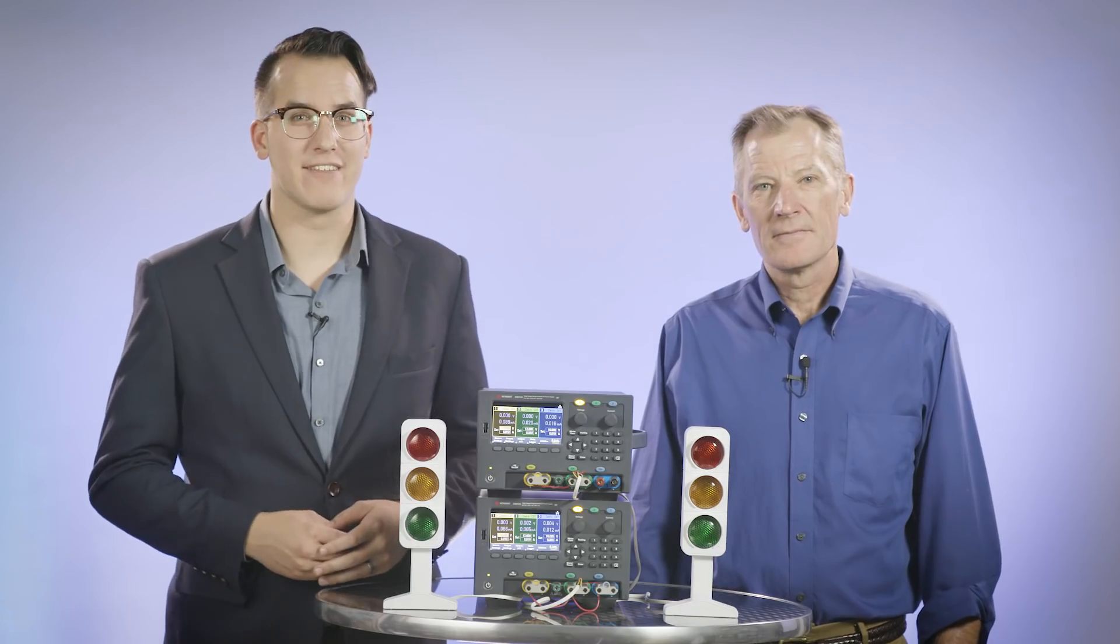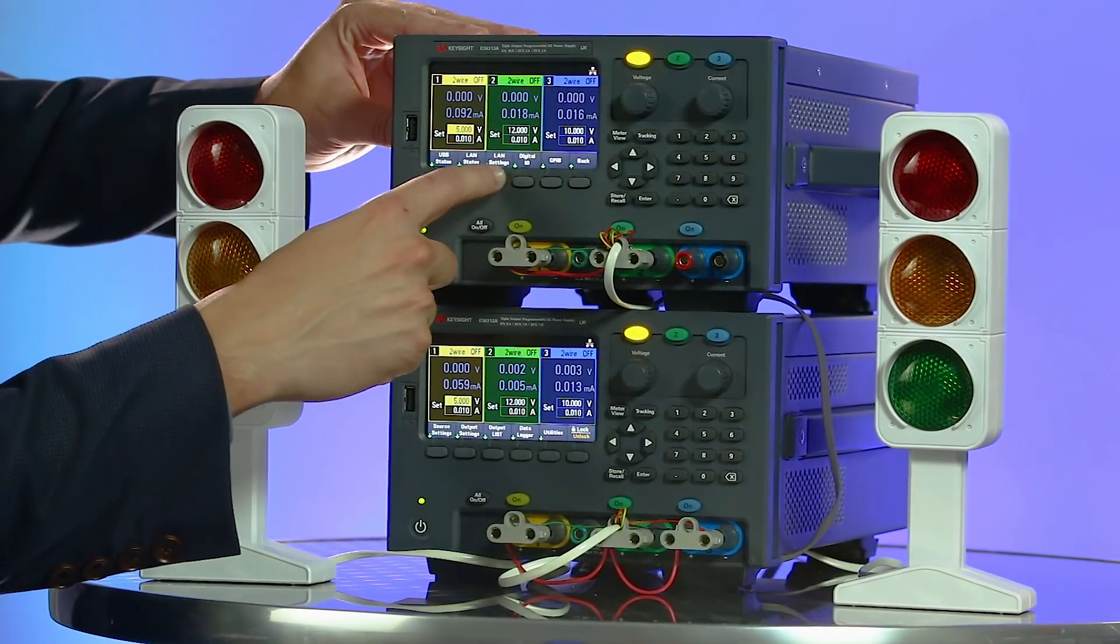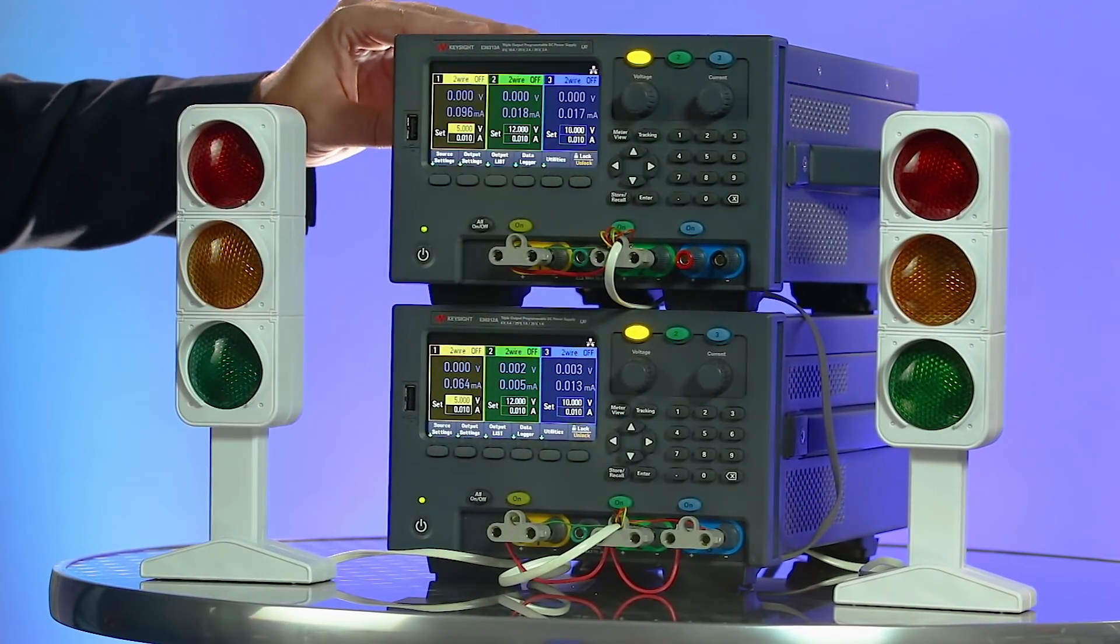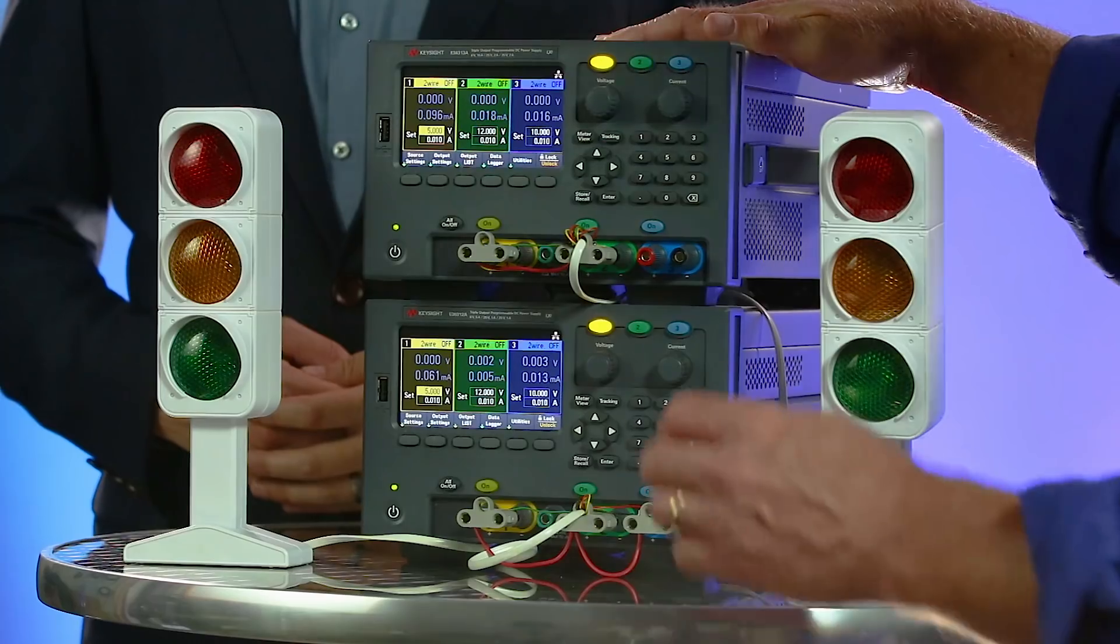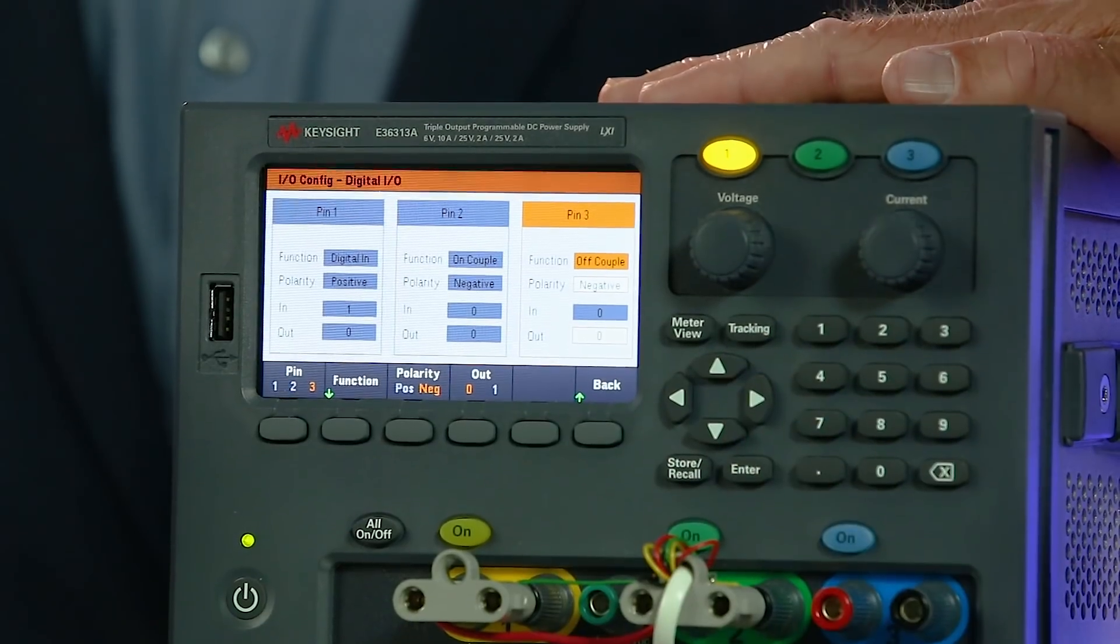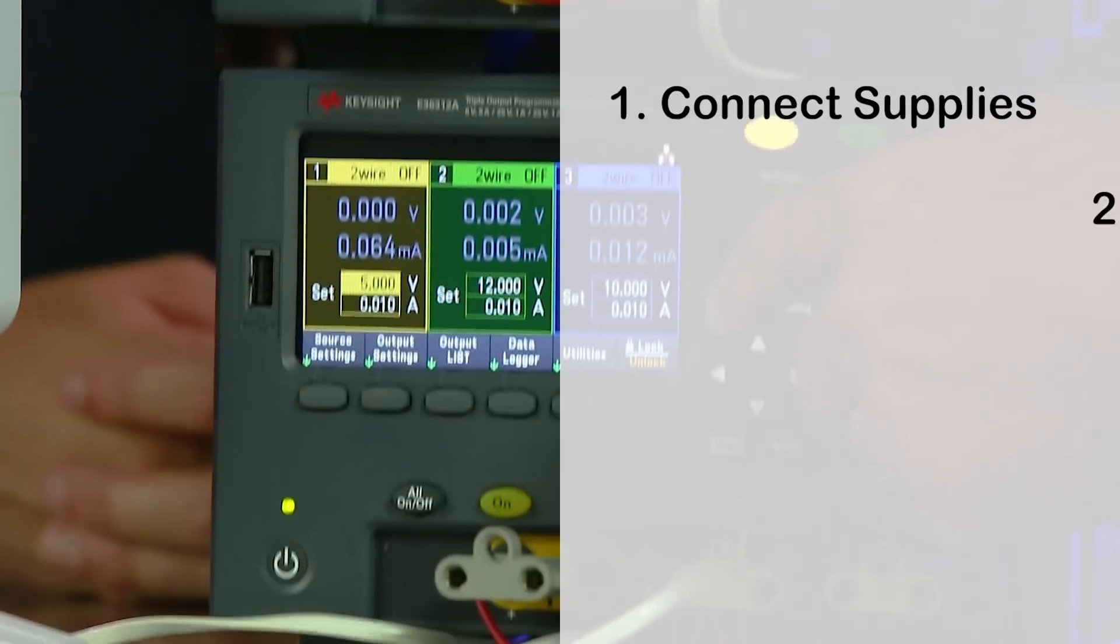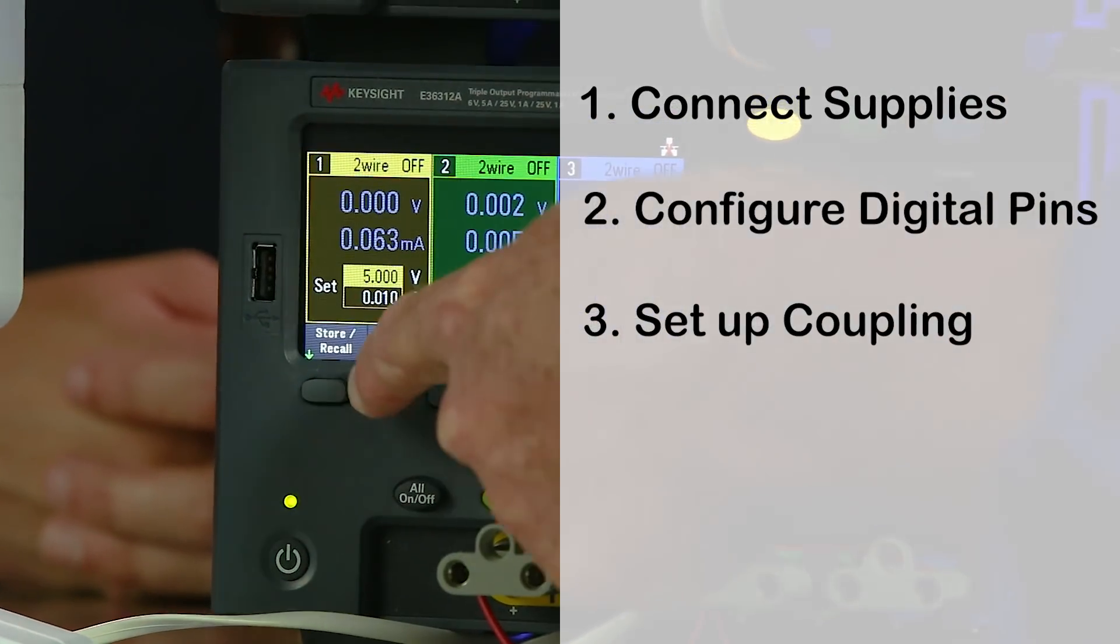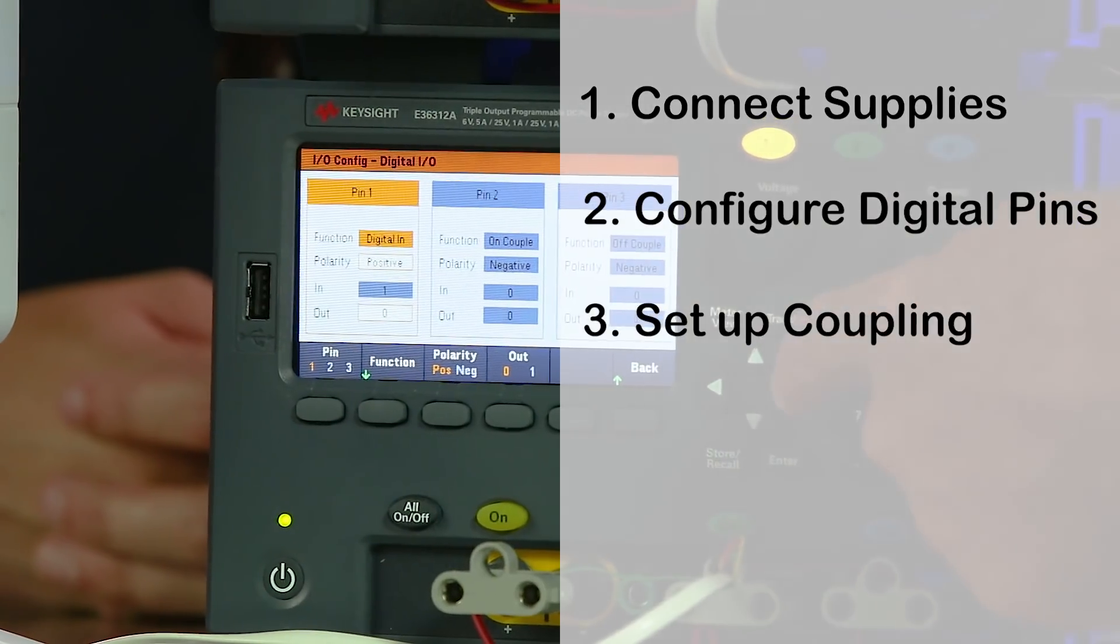A quick fun UI fact that Bill taught me, the meter view button acts as a home button and is an easy way to exit out of any menu train. With the digital I/O configured, we will set up the coupling in the first power supply. On the second power supply, we'll select the outputs to be enabled upon receiving the signal. I've chosen two channels. We can also set the output delays from the same screen.